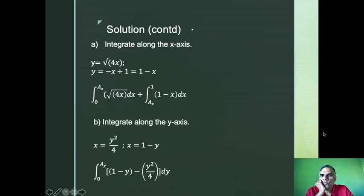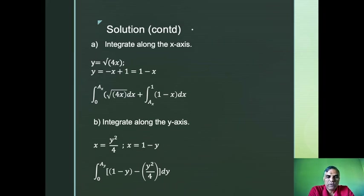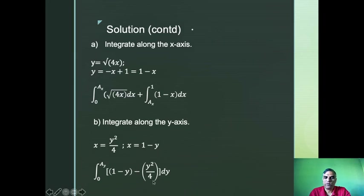When integrating along the x-axis, convert equations as functions of x: y² = 4x gives y = √(4x), and x + y = 1 gives y = 1 − x. The integrals are from 0 to Ax under the parabola, and from Ax to 1 of (1 − x) dx. When integrating along the y-axis, write equations as functions of y: x = y²/4 and x = 1 − y. Integrate from 0 to Ay the difference (1 − y) − y²/4 with respect to dy.